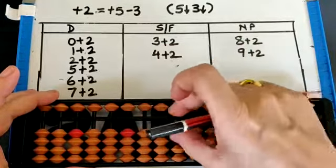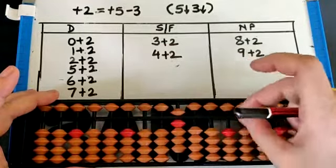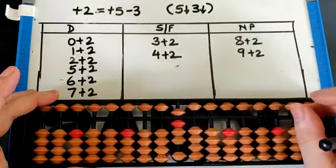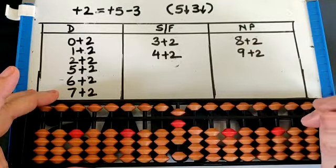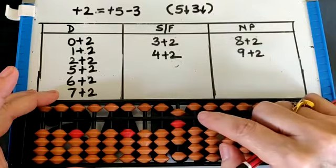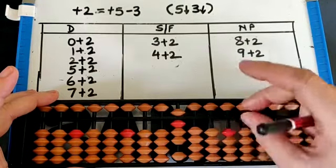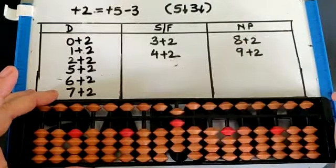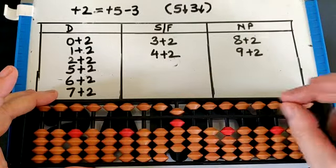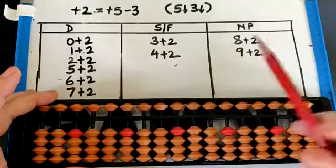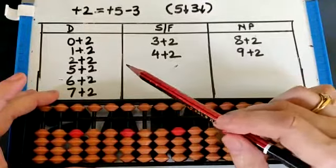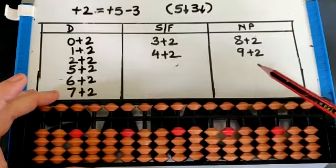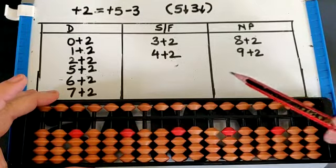Now 8 plus 2 - can we do it with small friend? No, because the 5 bead is already down, so it is not possible with small friend. Similarly, 9 plus 2 is not possible with small friend. So we have checked the possibilities: direct, small friend, and not possible.